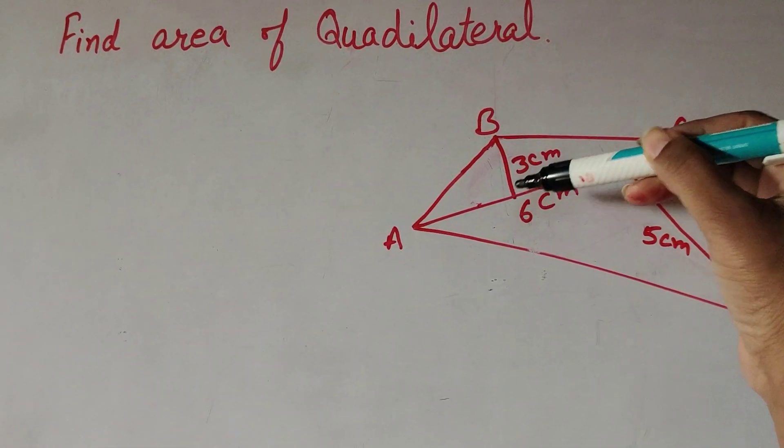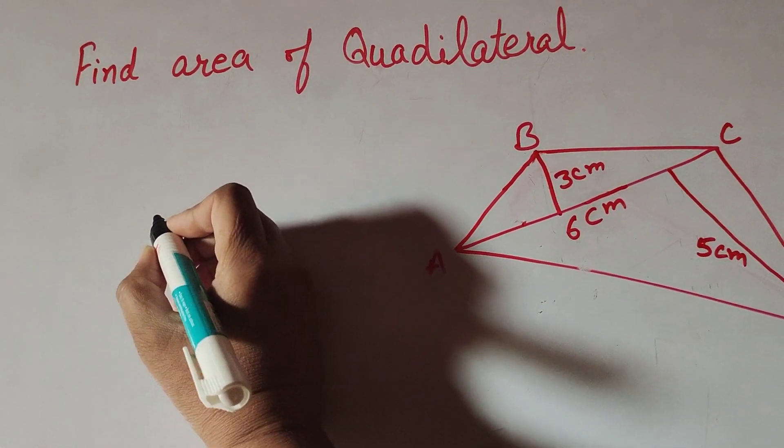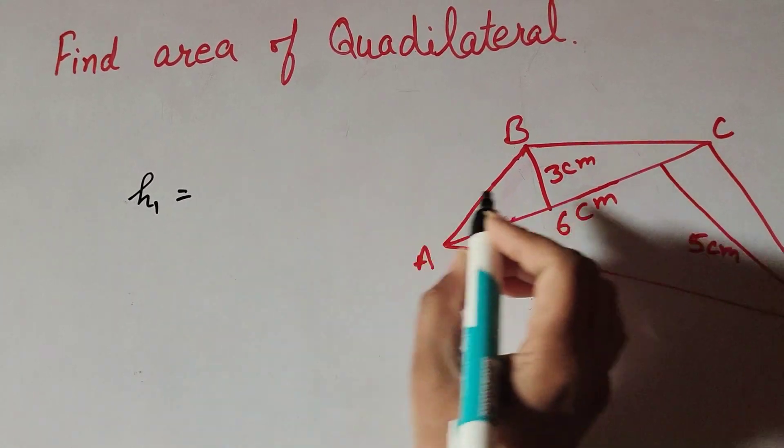Two perpendiculars on the diagonal and their lengths are given. So let's start. The height of the perpendicular is 3 centimeter.